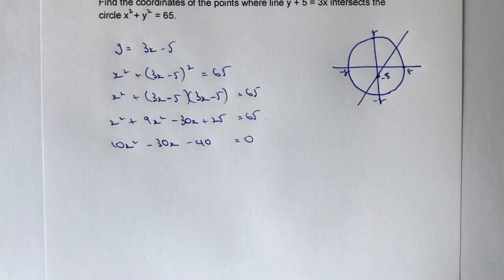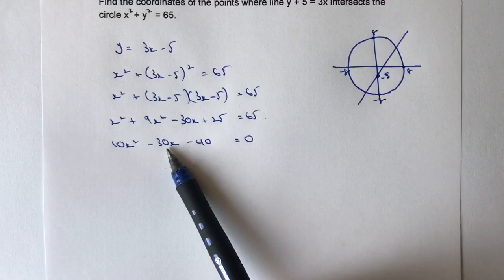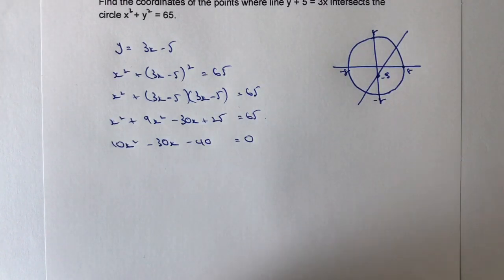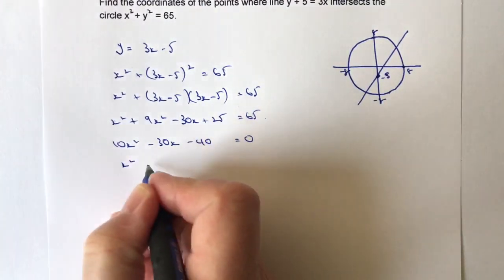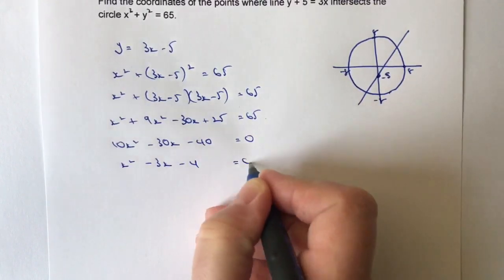Well, hopefully you can see that because I've got coefficients of multiples of 10, then I can divide the whole formula through by 10, or the whole equation through by 10. So this would become x squared minus 3x minus 4 equals 0.